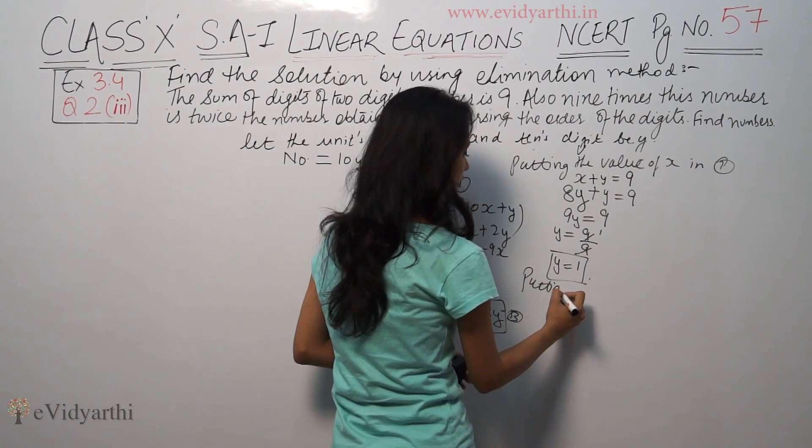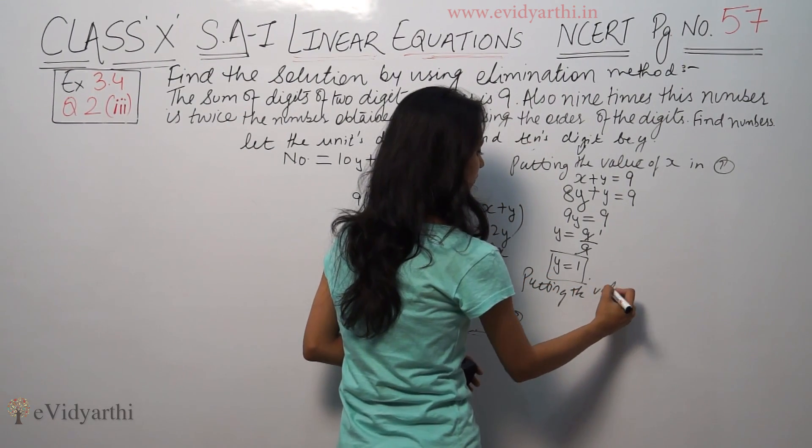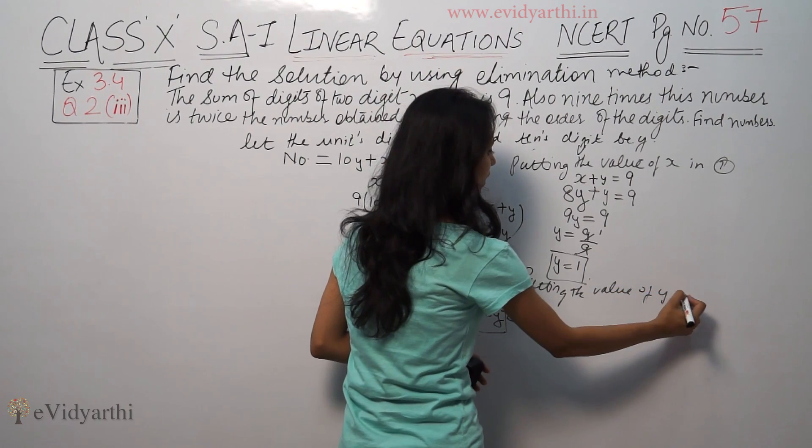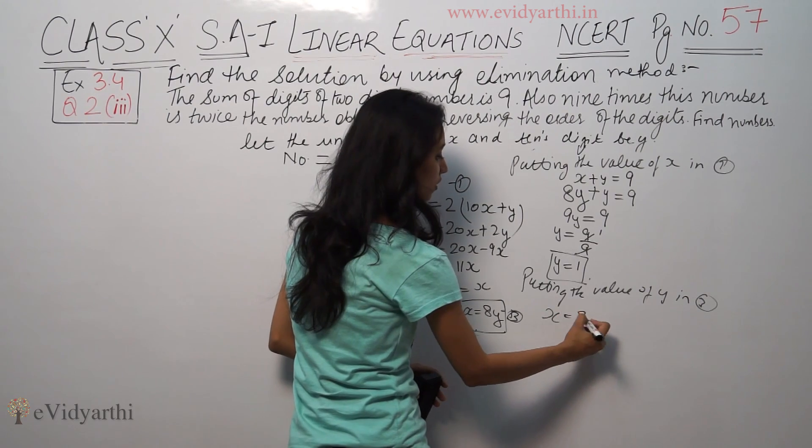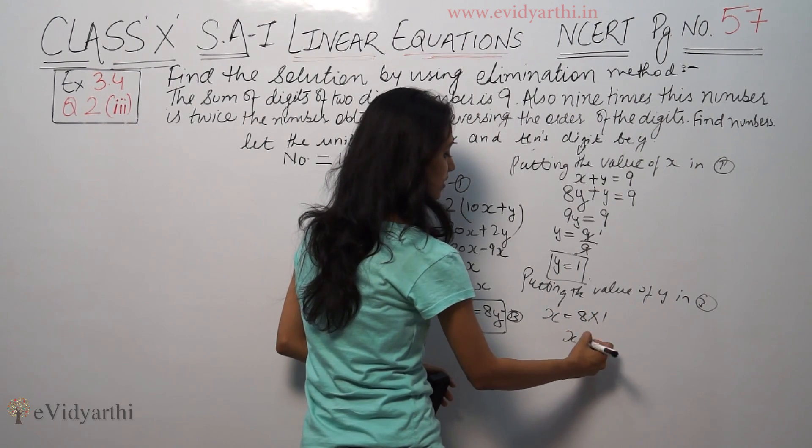Putting the value of x in the first equation: 8y plus y equals 9, so 9y equals 9. Therefore y equals 1, and x equals 8 times 1, so x equals 8.